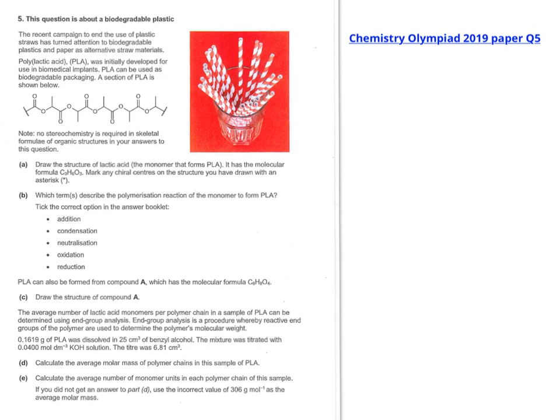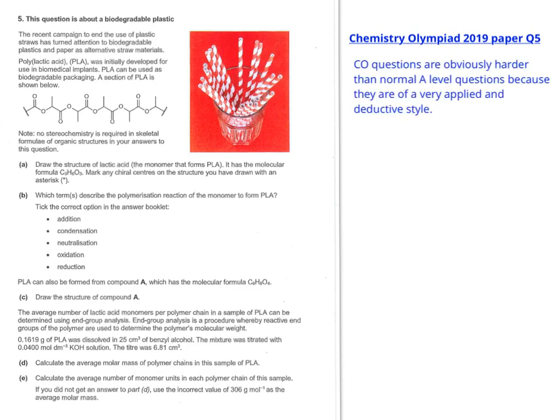So before we go into the question, I just want to take you through a little bit about how to do a Chemistry Olympiad question. Because Chemistry Olympiad questions are quite applied and deductive, that makes them harder than normal A-level questions. Because they're written with A-level students in mind, the topic area should be accessible. So this particular topic area is to do with polymers and condensation polymers - addition, condensation, neutralisation, reaction types and things like that.